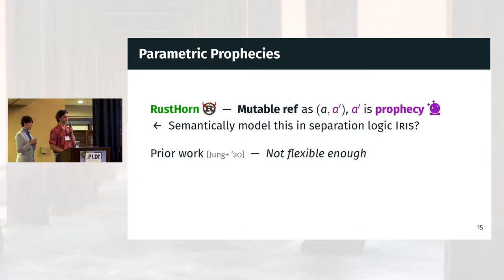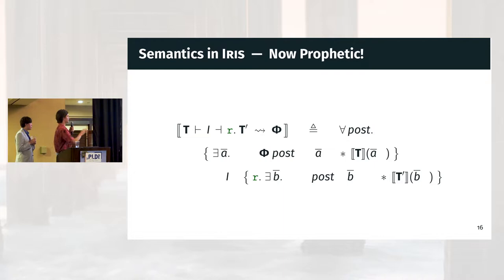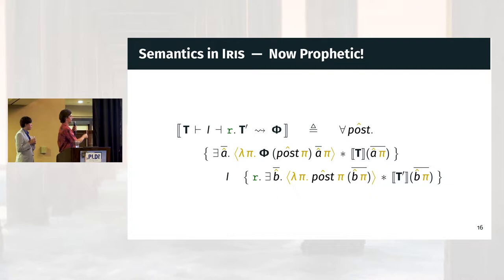Reasoning about these kinds of prophecies is really the crux of the RustHornBelt proof. We need some mechanism to reason about prophetic choices in Iris directly. Looking at prior work, we realized it wasn't flexible enough — especially to handle cases like index_mut, where we're creating prophecies out of smaller bits of existing structures. So instead, we develop what we call parametric prophecies, which leverages what we named a clairvoyant monad — effectively a reader over one possible future that can occur. We quantify all of our predicates over all possible futures from any given point. In our semantics for typing judgments, we add a lambda-pi term representing a closure over all possible futures, saying that predicates must hold for all possible futures that can occur from this point on.